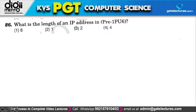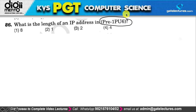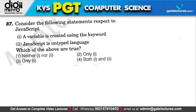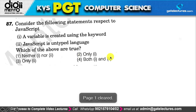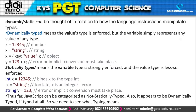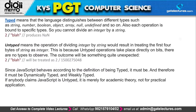Next, consider these statements about JavaScript: statement 1 — a variable is created using the 'var' keyword; statement 2 — JavaScript is an untyped language. Statement 1 is correct, but statement 2 is not correct. For reference, weakly typed vs. strongly typed languages, and dynamically vs. statically typed languages, are related concepts you can read about.